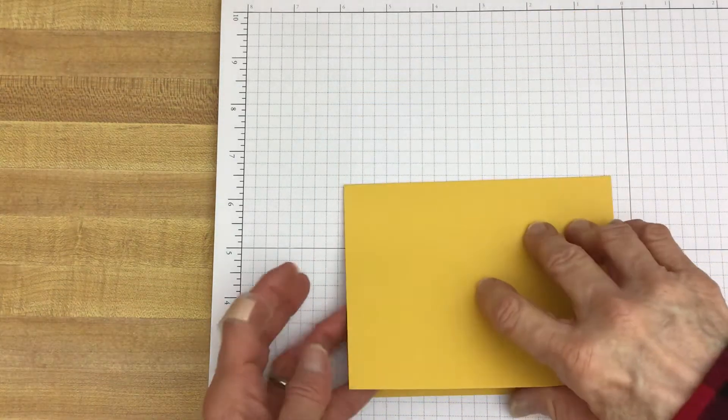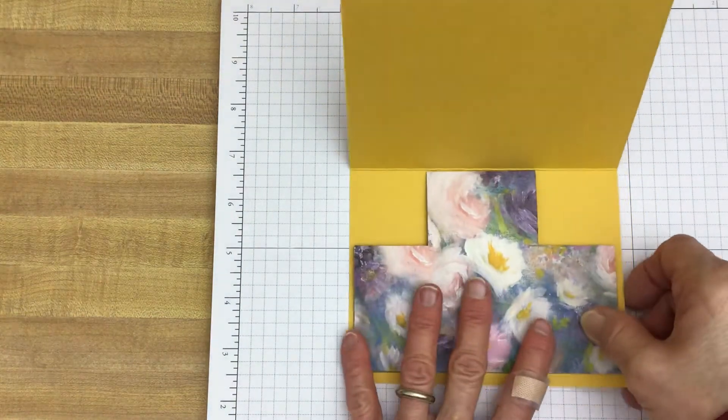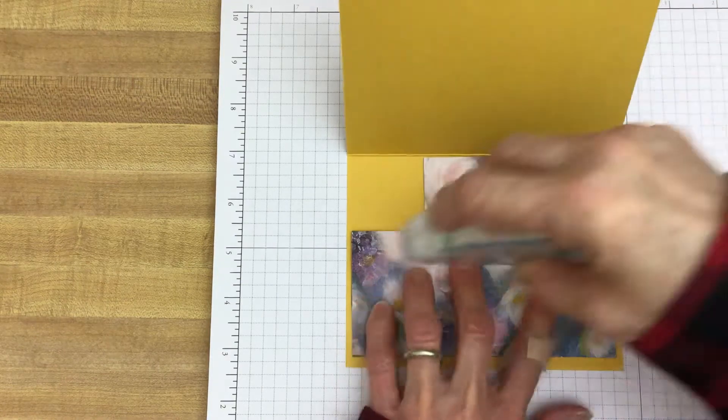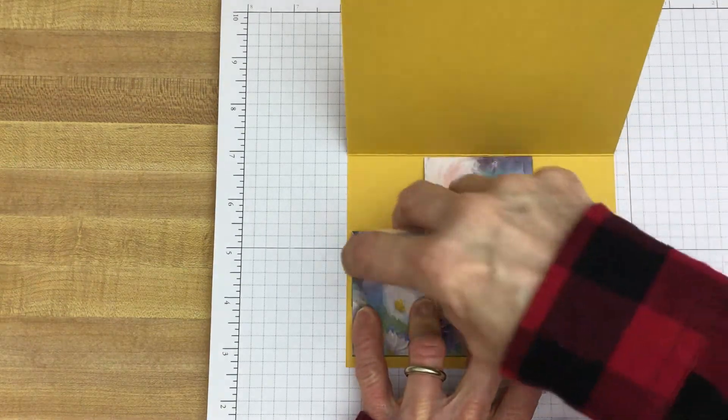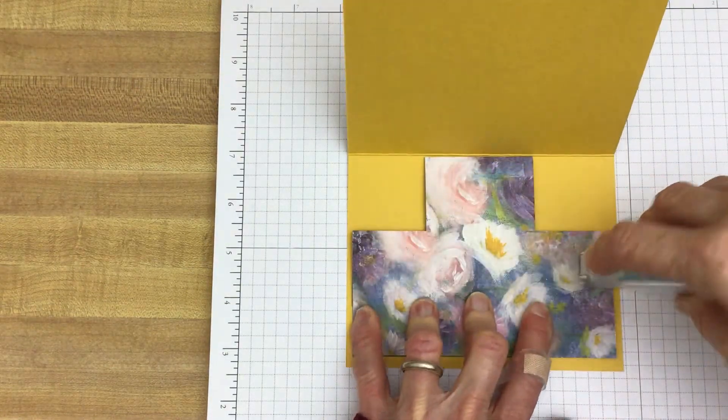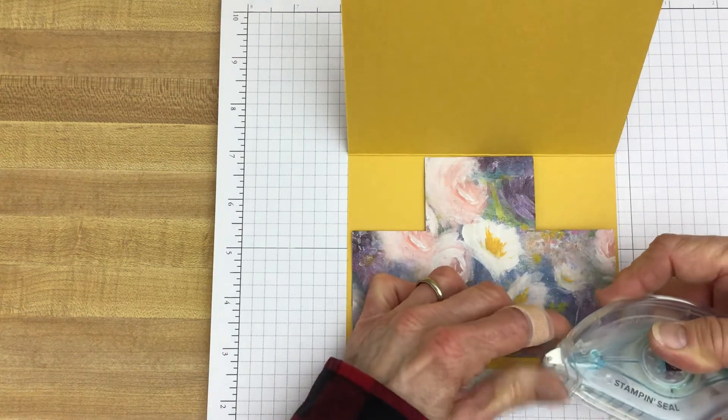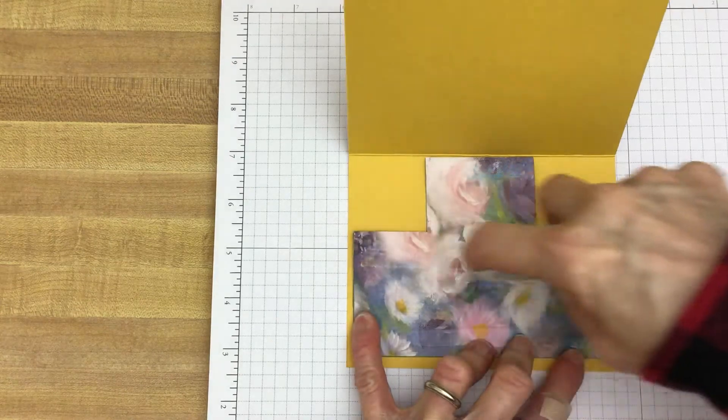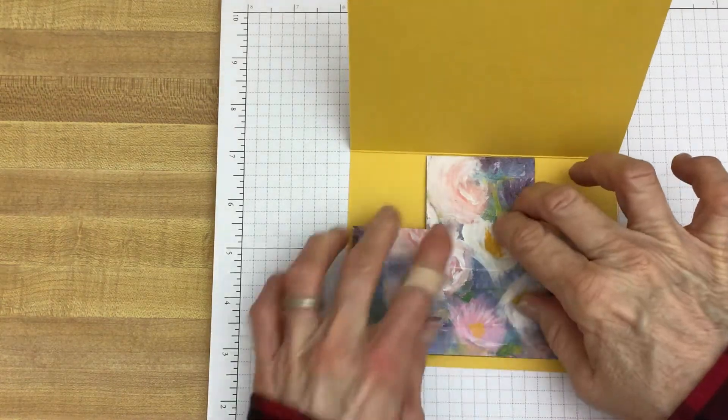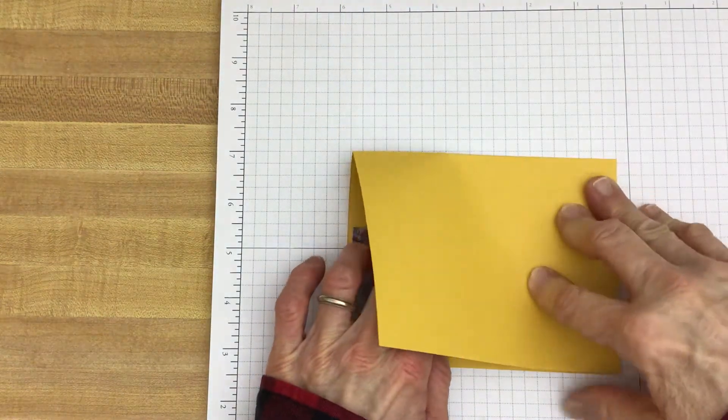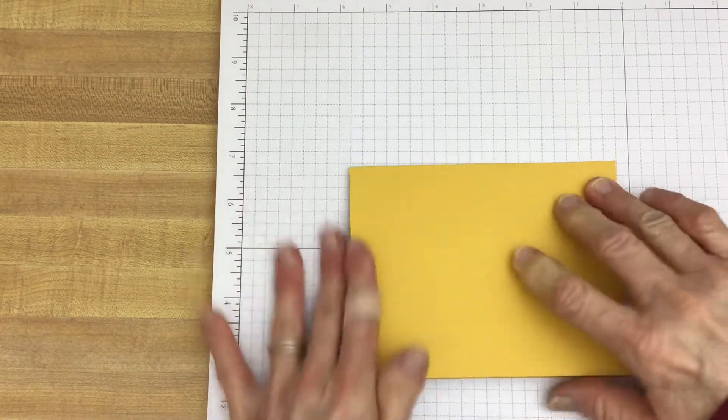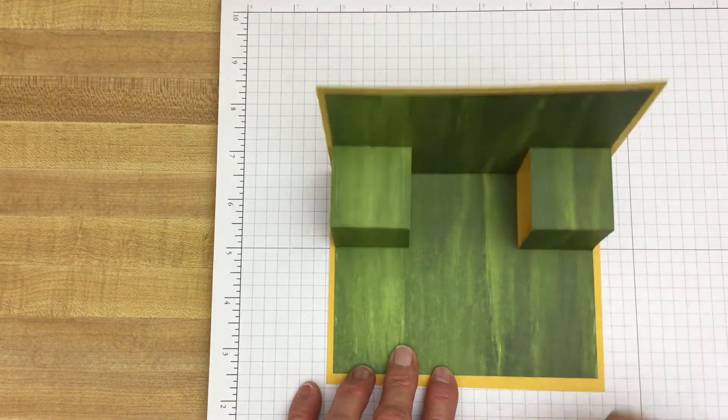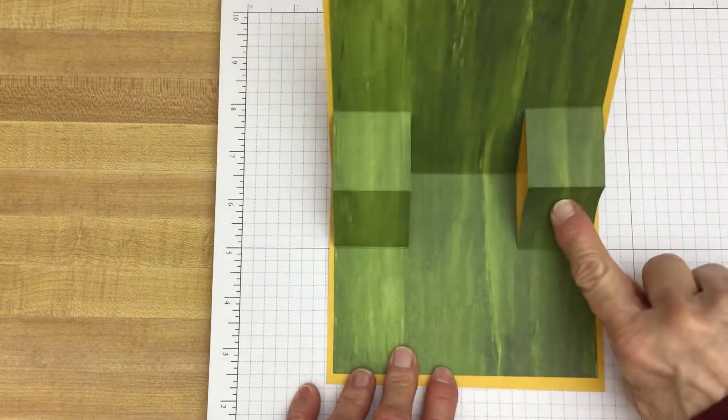And then you do the exact same thing for the other side. Put your adhesive. Hold it in place. And there you have it. There's your pop-up card. And you would put your little things that you want to pop up right there.